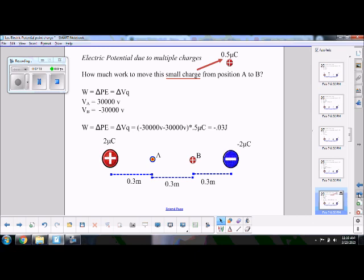So, final is negative minus initial, which was a positive. So a negative minus a positive gives you a really, really big negative change in voltage. You're going to a negative, going from a positive to a negative. It's a negative change. Multiply by the small charge that's doing the moving. That's not 2 microcoulombs, it's 0.5 microcoulombs.